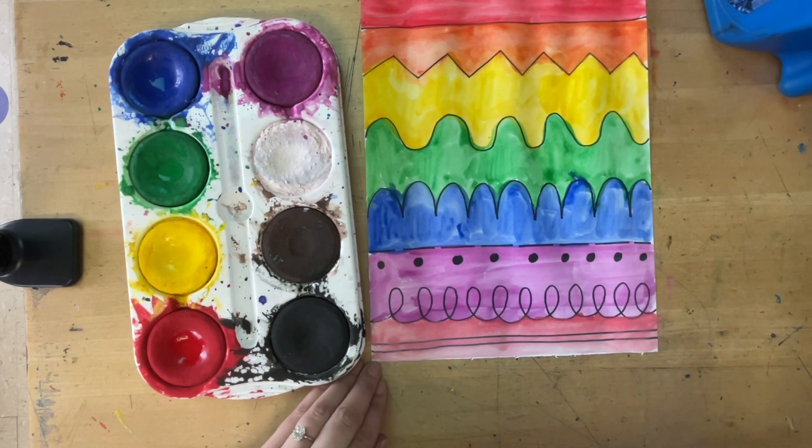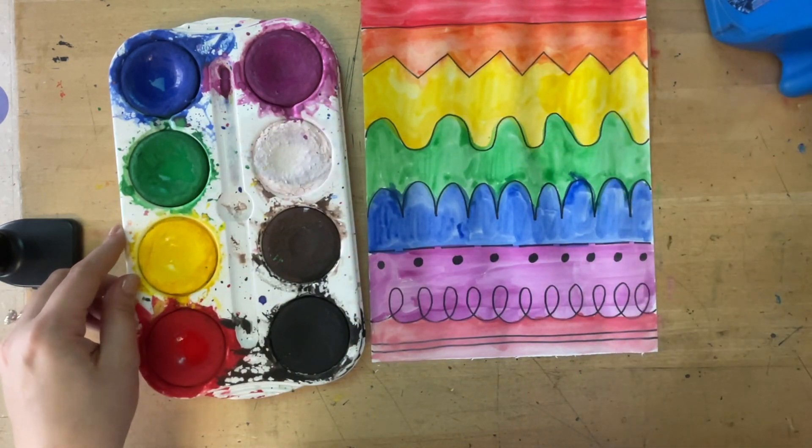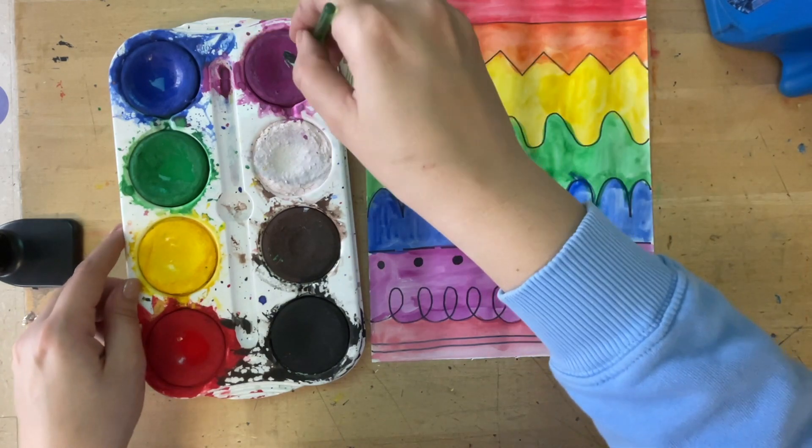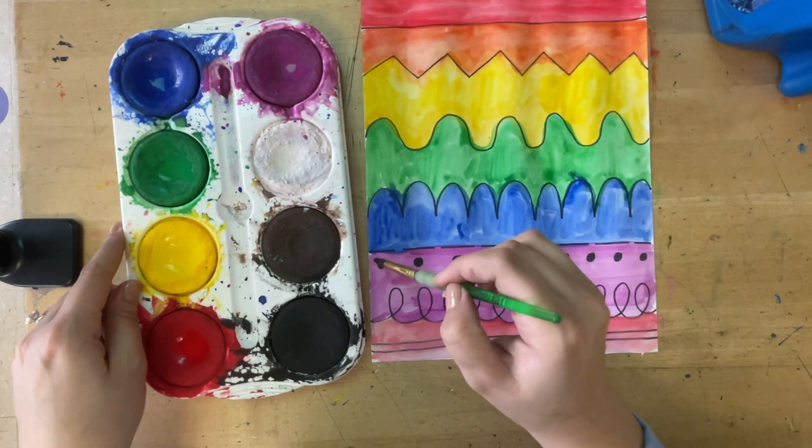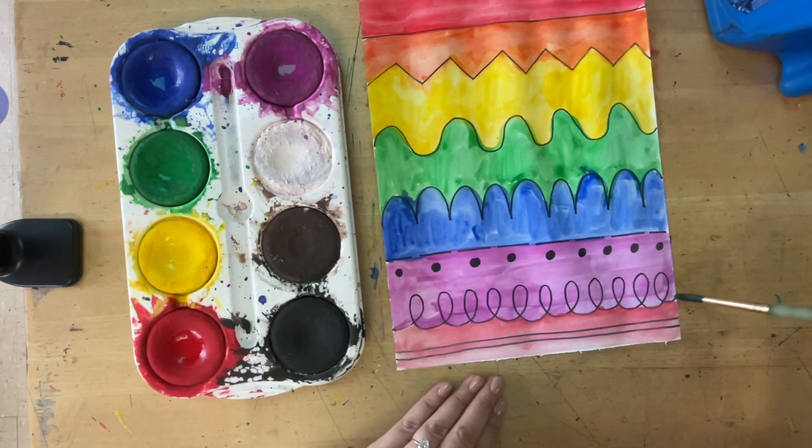Before your piece goes into the drying rack, double check to make sure there's no white spots. I see some touch-ups I need to make in my green, and I think there's a few white spots in my purple. So once you have all your white spots covered, pick up your piece like a pizza and put it into the drying rack.